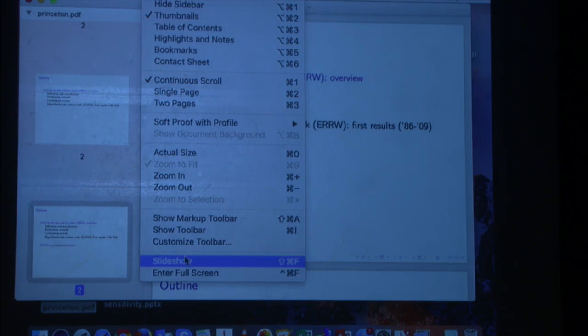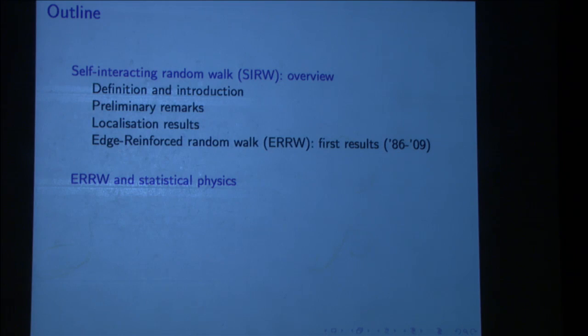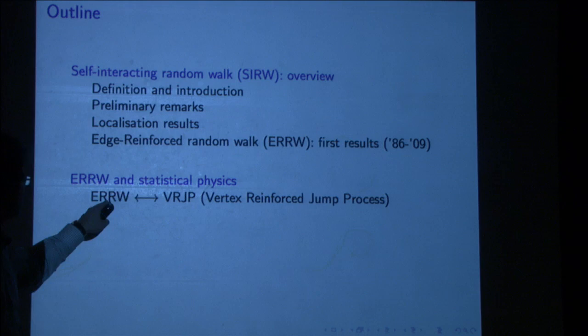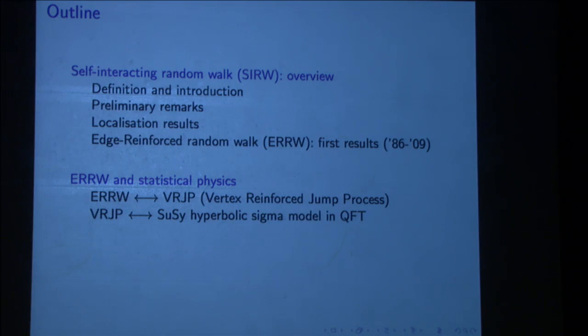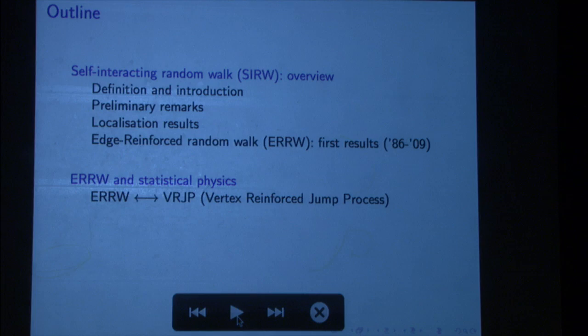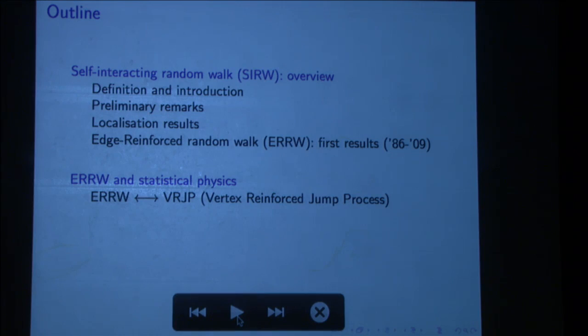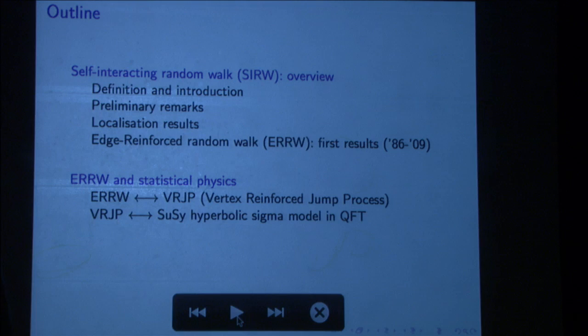This link goes through several steps. The first one is the link between the edge reinforced random walk and another process called the vertex reinforced jump process. This process was proposed by Werner and later introduced by Davis and Volkov. It turns out that this vertex reinforced jump process has a direct relationship with the supersymmetric hyperbolic sigma model in quantum field theory, which was studied by Disertori, Spencer, and Zirnbauer.